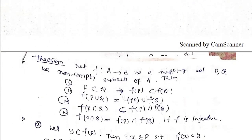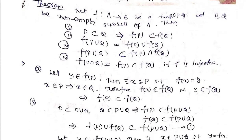Now we will prove some functional properties of mappings. Let f: A→B be a mapping and let P, Q be non-empty subsets of A. Then: (i) if P ⊆ Q then f(P) ⊆ f(Q); (ii) f(P∩Q) ⊆ f(P)∩f(Q); (iii) f(P)∪f(Q) ⊆ f(P∪Q) — actually the union satisfies equality.